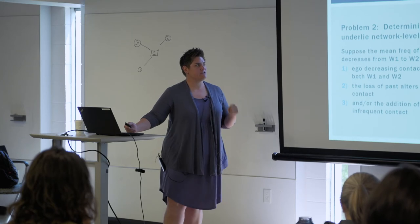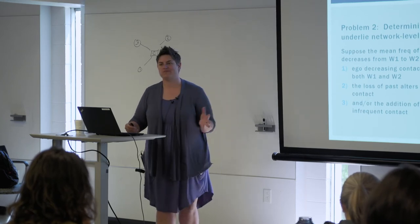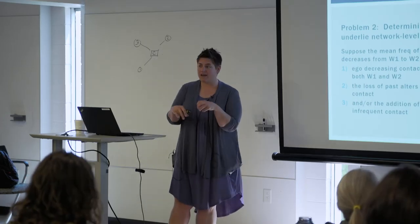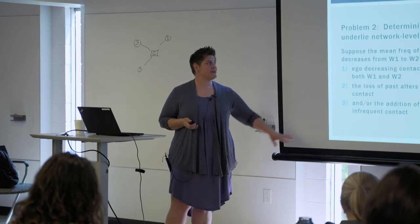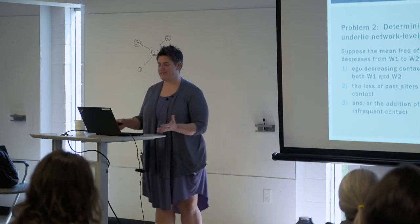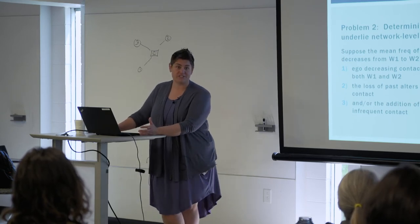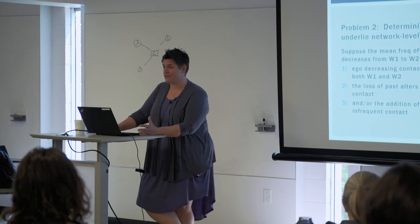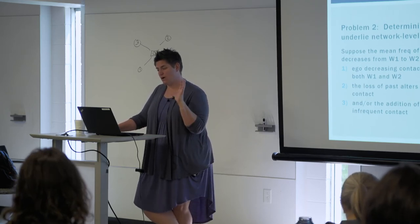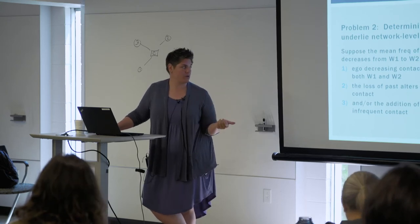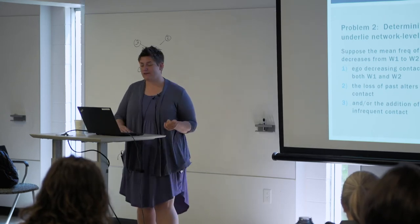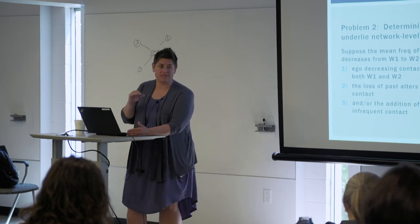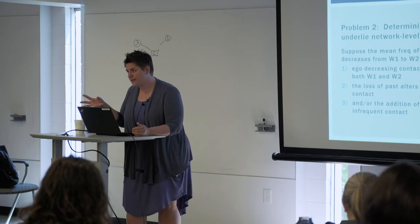The second problem is understanding what kinds of alter-level changes underlie network-level change. There can be a lot of movement going on under the surface in terms of membership while structural characteristics look the same. Suppose the mean frequency of contact decreases from wave one to wave two — I just see a net decrease. But this can be due to a number of different mechanisms: ego decreasing contact with alters present at both waves, or something else entirely.